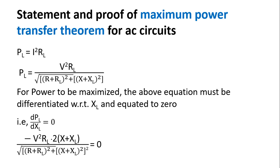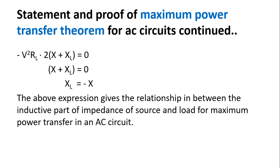Power is the product of i squared and RL. Therefore, PL equals V squared times RL divided by (R plus RL) squared plus (X plus XL) squared. For power to be maximized, the above equation must be differentiated with respect to XL and equated to zero. Here XL is the variable quantity. Differentiating and simplifying, we get XL equal to minus X. This expression gives the relationship between the inductive part of the impedance of source and load for maximum power transfer in an AC circuit.